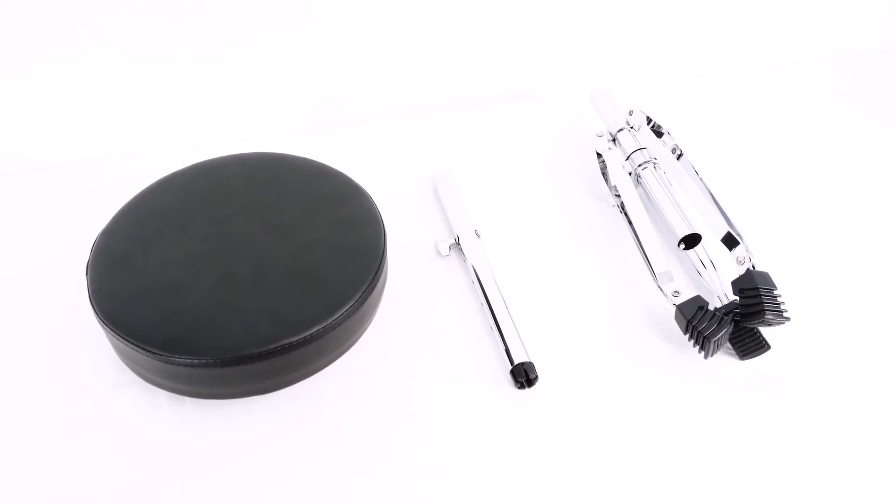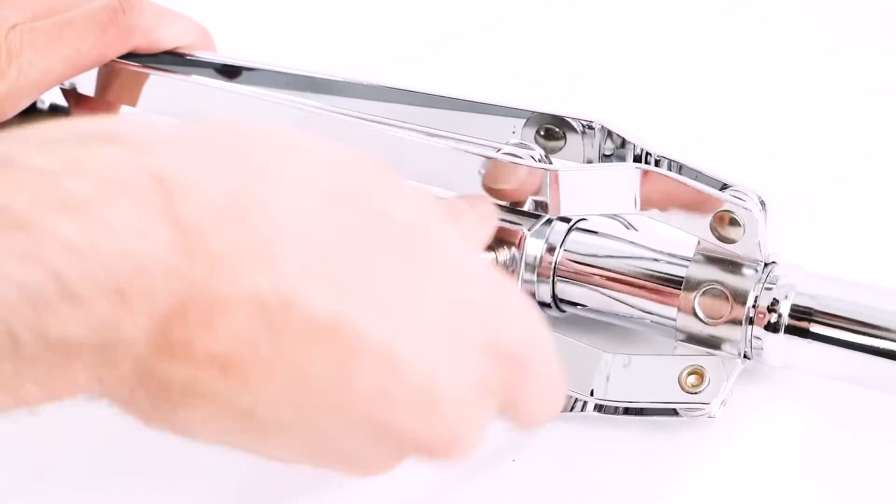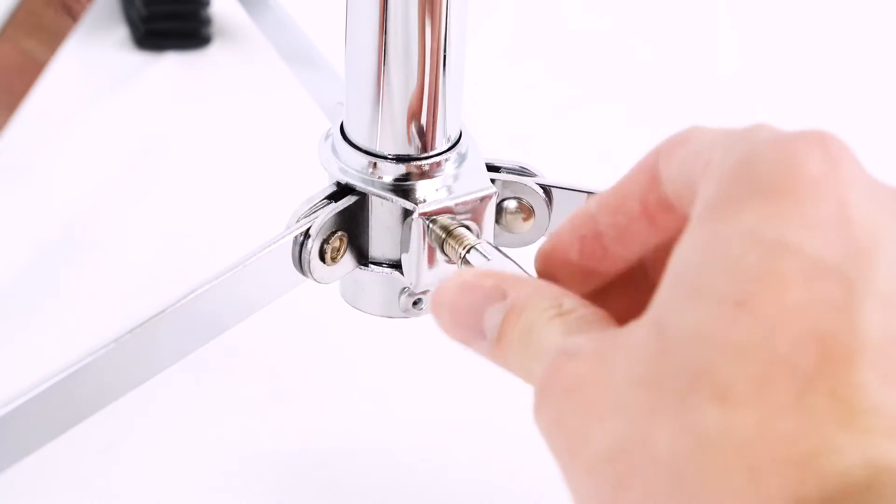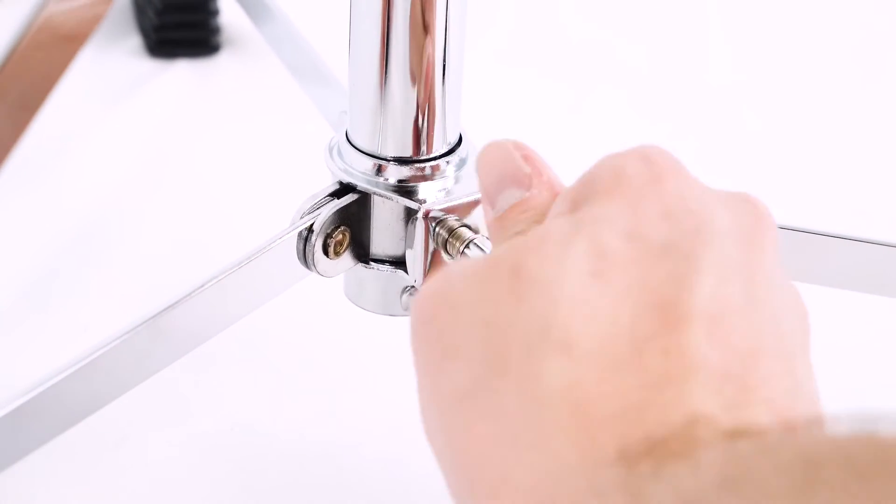The first thing we're going to want to do to get set up is loosen this knob on the tripod base to spread out the legs of the base. Then we can tighten the knob back up to lock it into place once we have it in a good position.